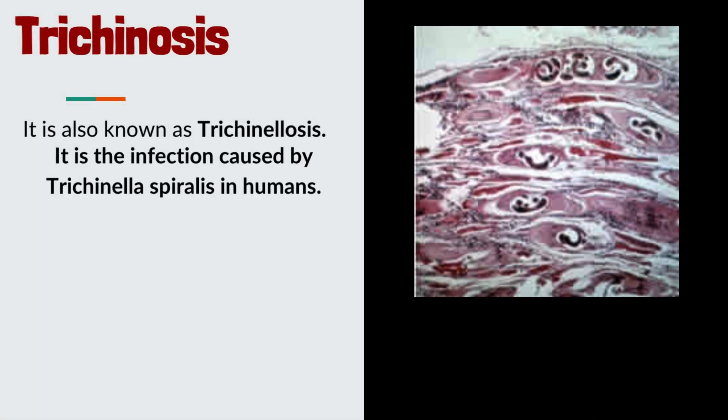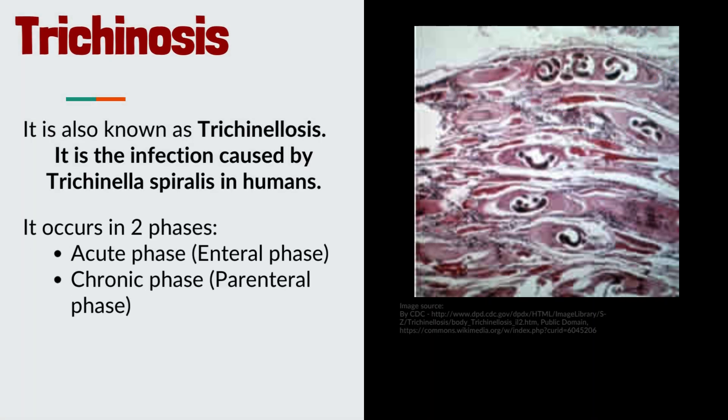What is trichinosis? It is also known as trichinellosis. It is the infection caused by Trichinella spiralis in humans. It occurs in two phases: the acute phase, also called the enteral phase, and the chronic phase, also called the parenteral phase.